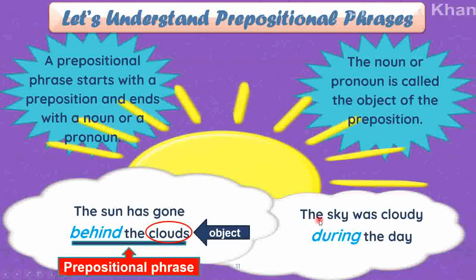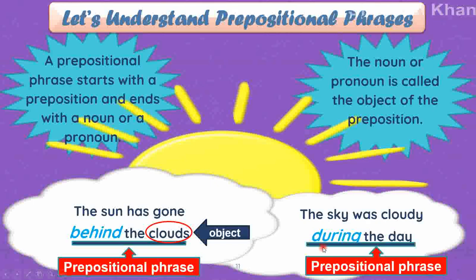Now let's see this next example: 'The sky was cloudy during the day.' 'During' indicates time. The group of words 'the sky was cloudy' is connected to the noun 'day' by the preposition 'during.' Now where is our prepositional phrase? It has to start from the preposition and end with the noun — so the prepositional phrase is 'during the day.' And the object of the preposition? It is the noun 'day.' Well done.